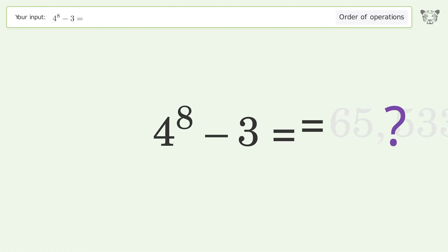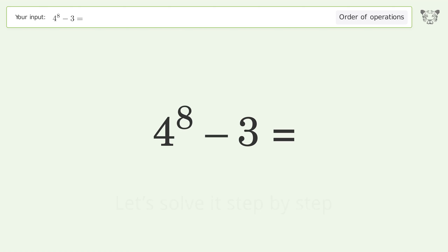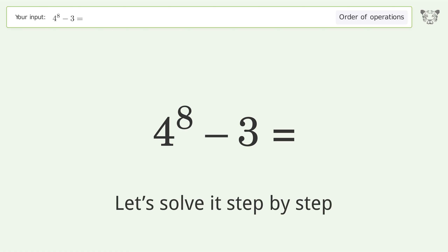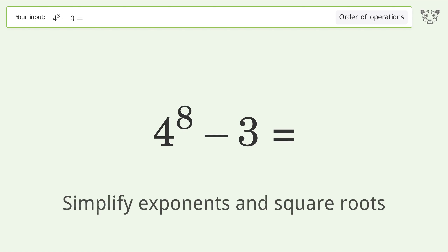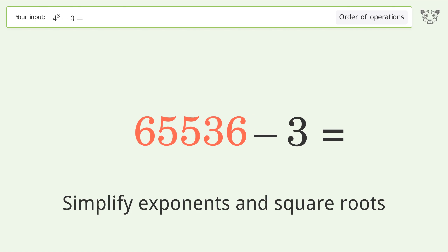You asked Tiger to calculate. This deals with the order of operations. The final result is 65,533. Let's solve it step by step.